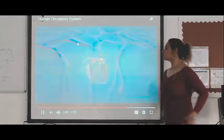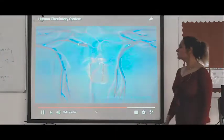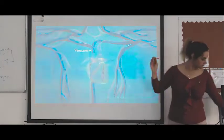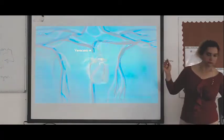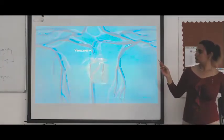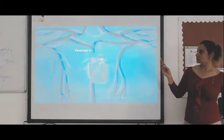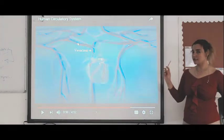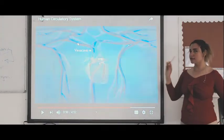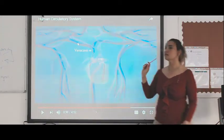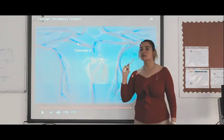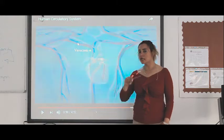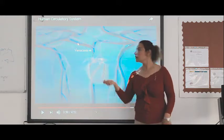The veins carry the deoxygenated blood to the heart. The blood vessels that carry the deoxygenated blood to the heart are known as the vein. What is the main blood vessel that carries the deoxygenated blood? Deoxygenated means the blood that is free of oxygen, or contains carbon dioxide instead.